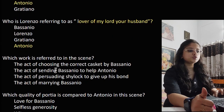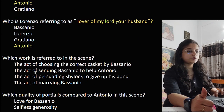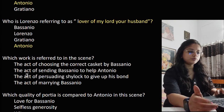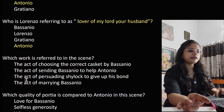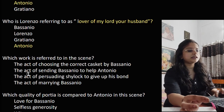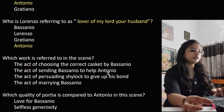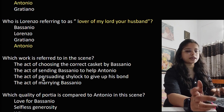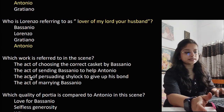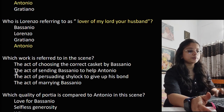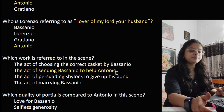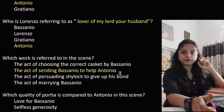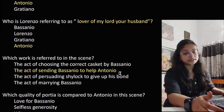Which work is referred to in this scene? The act of choosing the correct casket by Bassanio was already done in Act 3 Scene 2, so that is incorrect. The act of marrying Bassanio has also been done. The act of persuading Shylock is incorrect because Portia hasn't even reached Venice yet. The correct answer is the act of sending Bassanio to help Antonio.